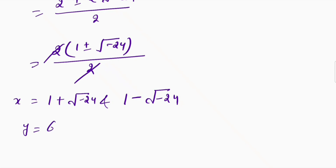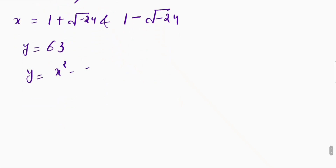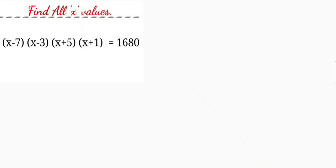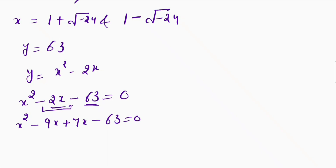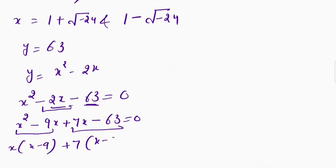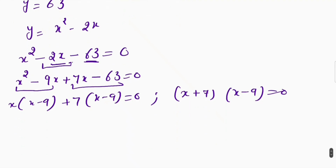Now we put y equal to 63. We know y equals x squared minus 2x, so substituting gives x squared minus 2x minus 63 equals 0. Using the midterm split method: negative 9x plus 7x minus 63 equals 0. Taking x common gives x(x minus 9) plus 7(x minus 9) equals 0, so we get (x plus 7)(x minus 9) equals 0. From here we get two values of x: x equals negative 7 and x equals 9.